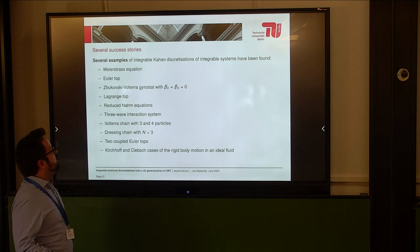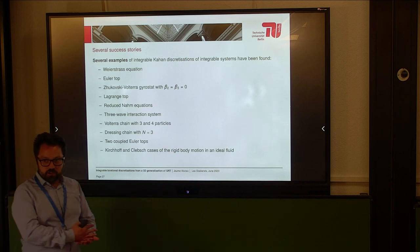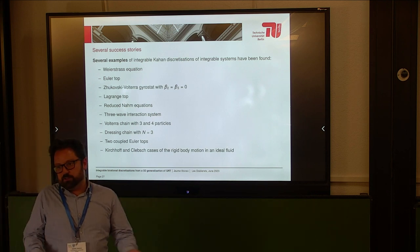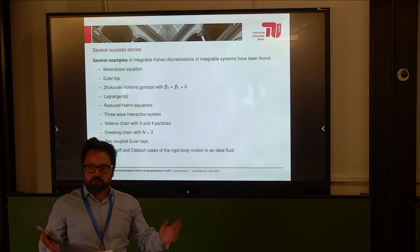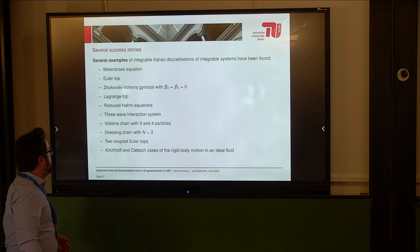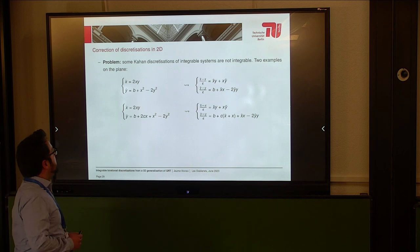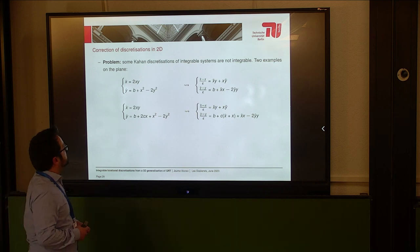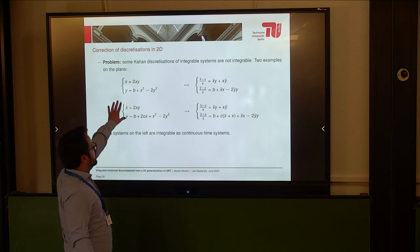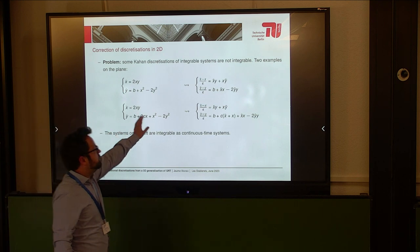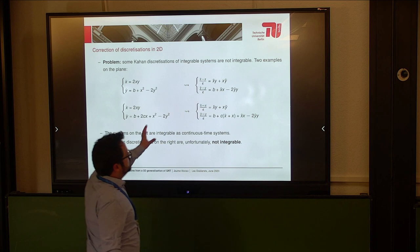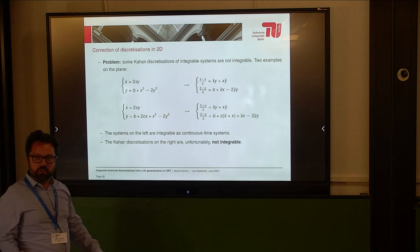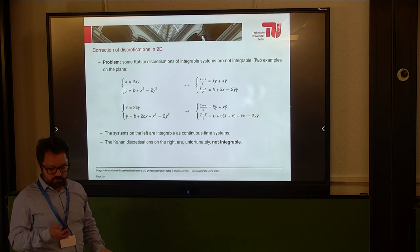There is a list of examples where this works: we get at least some of the conserved quantities, often even all of them. This gave a lot of hope — it's the perfect story: a forgotten method suddenly works. But then came the bad news: even in two dimensions there are examples where this does not work. These are very simple systems in two dimensions that are integrable as continuous-time systems, but the corresponding Kahan discretization is not integrable and has no conserved quantity. You can see chaos and mess — the solutions clearly don't lie on curves.